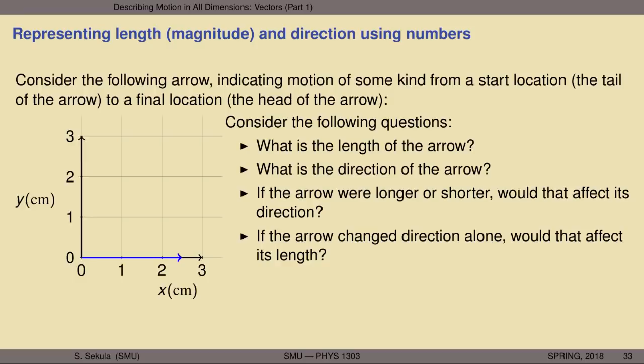Consider the following questions about this arrow: What is its length? What is its direction? If the arrow were longer or shorter, would that affect its direction? If the arrow changed direction alone, would that affect its length? Pause the video and try to answer each of these four questions.